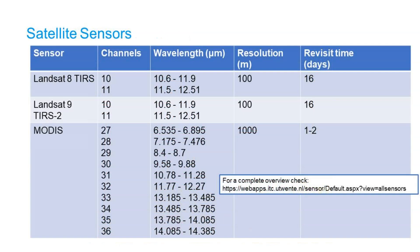We can also measure thermal infrared radiation from space using satellite sensors. Currently the most popular sensors are Landsat 8 and Landsat 9. They have the TIRS sensor which measures the thermal infrared in two channels, channel 10 and 11, and it has a spatial resolution of 100 meters and a revisit time of 16 days.